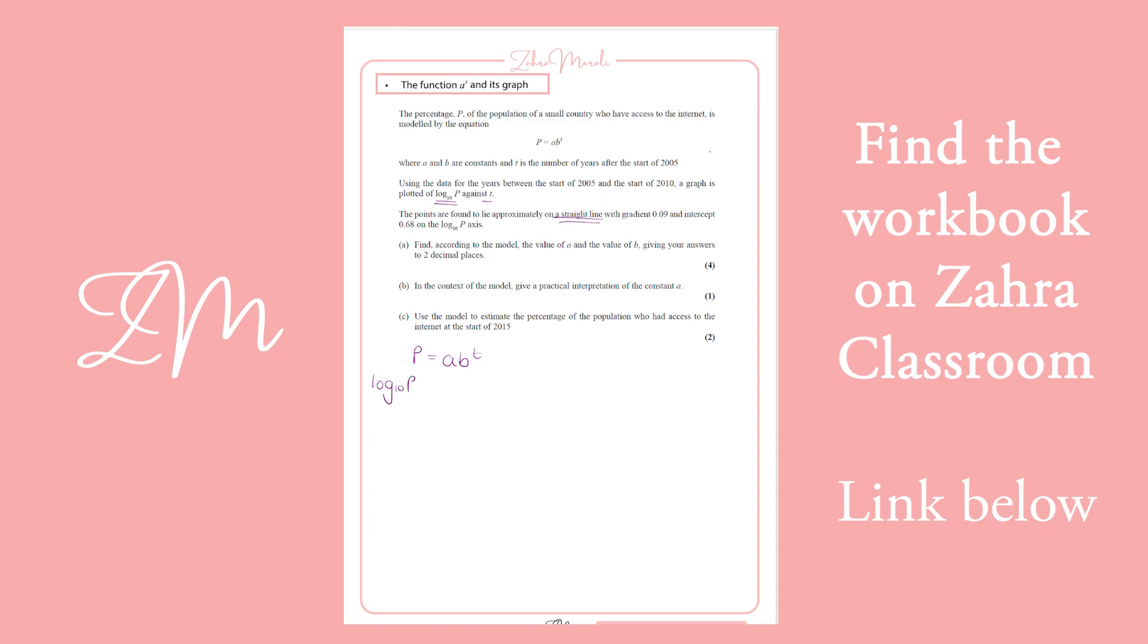So we've got a log base 10 both sides, and when we do that on the right-hand side, we use the log rules and we separate this out. But we know also that that T can come down as part of your log rules.